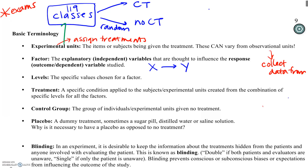Once we have that random assignment, the classes are definitely our experimental units — they're the things being randomly assigned. Ideally, in a perfect experiment, you would only look at class-level data: what was the pass rate for classes that had a CT versus those that didn't? Whether or not an individual student goes to CT sessions is irrelevant — it's about whether the CT is present at all.